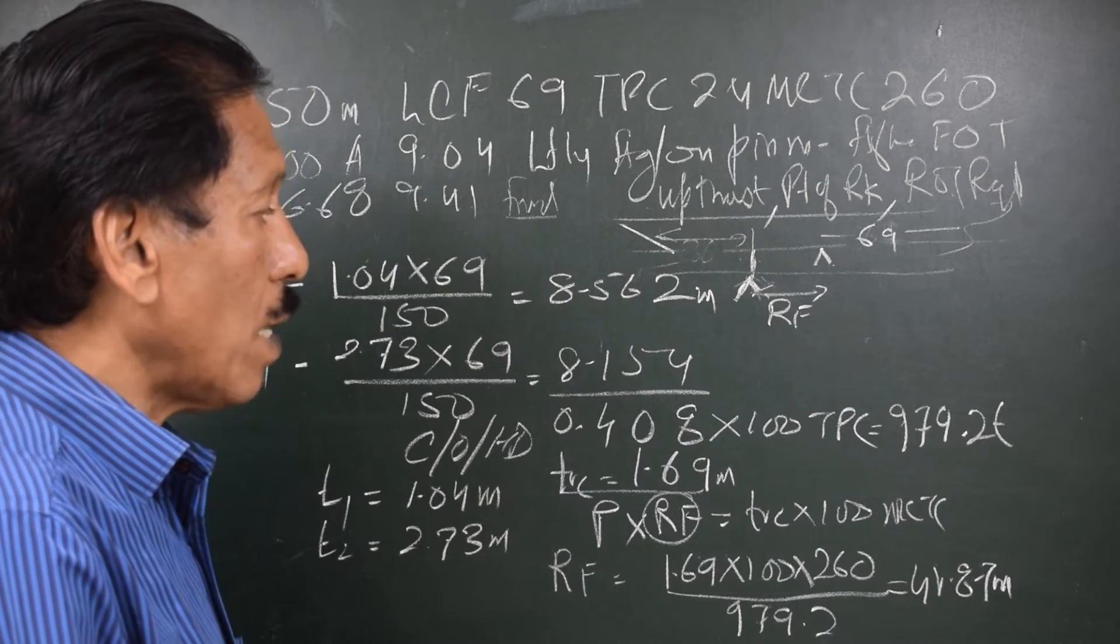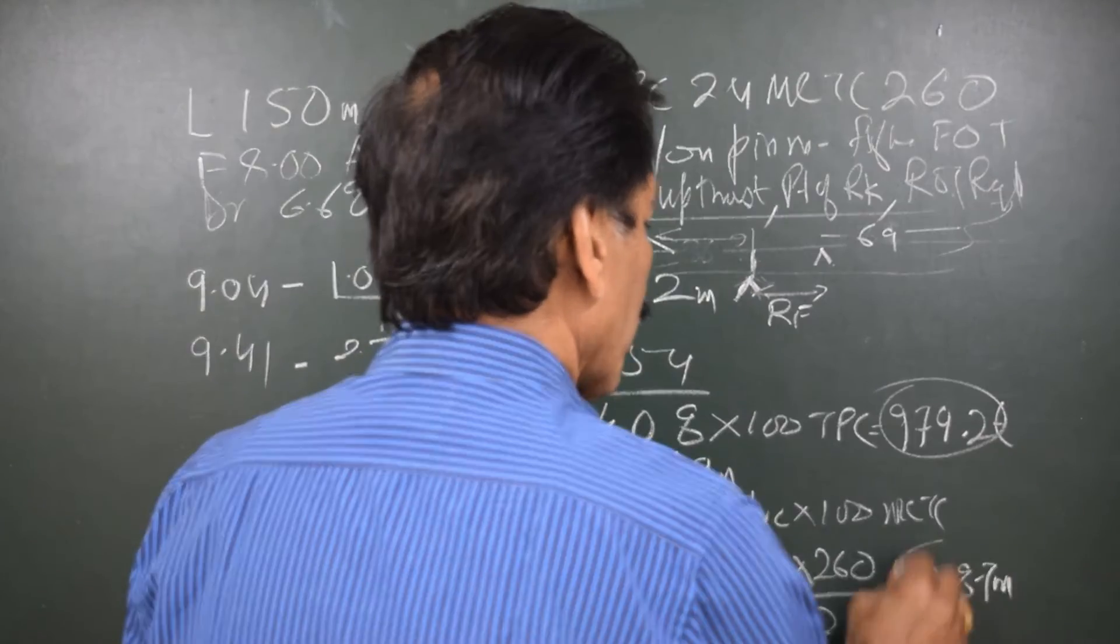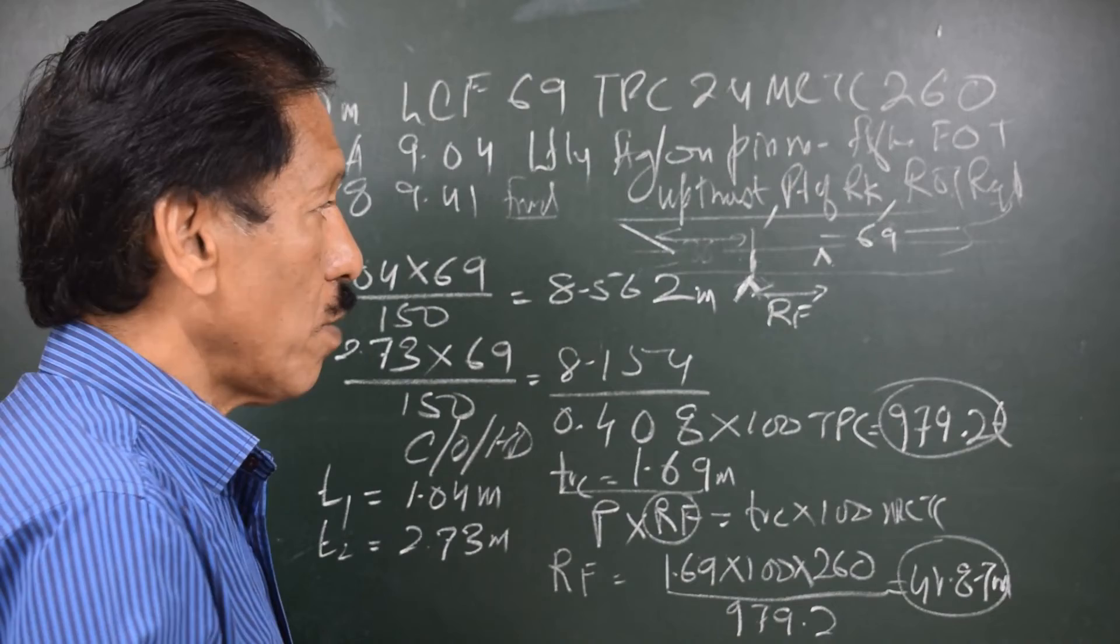So we have found out the upthrust is 979.2. We have found out the position of rock, that is 44.87 meters forward of center of rotation.